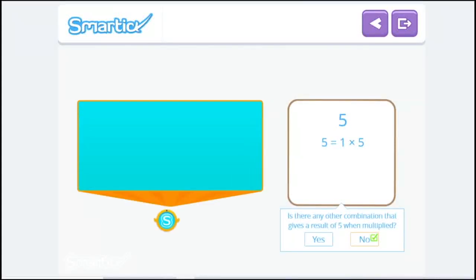The numbers that only have one factorization are called prime numbers. The first prime numbers are 2, 3, 5, 7, 11, 13, 17.